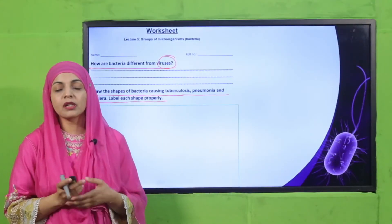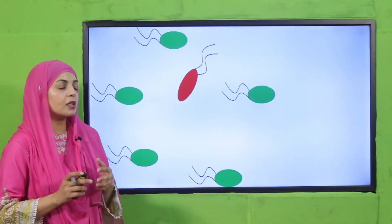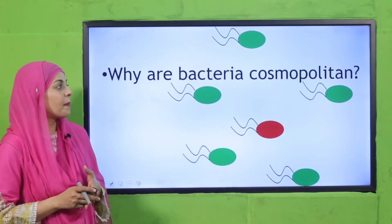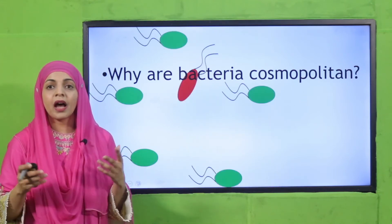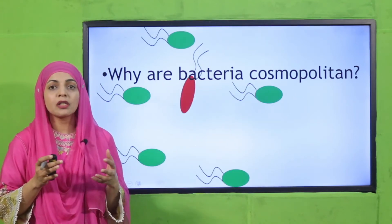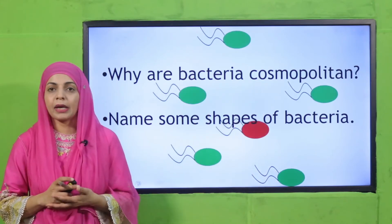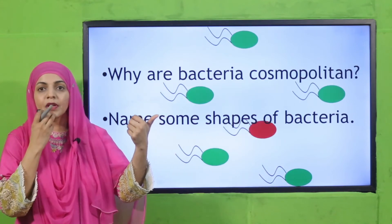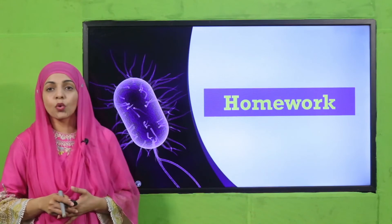For evaluation, listen to the questions carefully and answer quickly. Why are bacteria cosmopolitan? Because they are present in almost any kind of habitat and they are not plants or animals. Name some shapes of bacteria: round, comma, and rod-shaped. Very good.